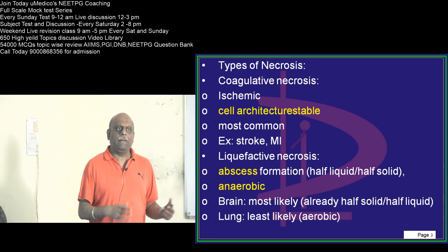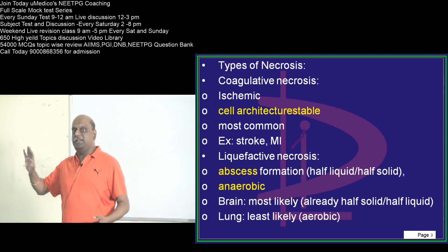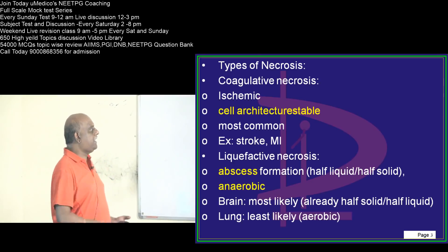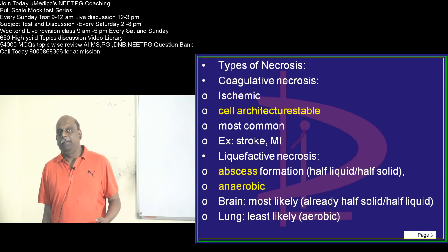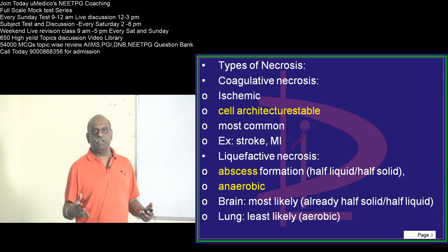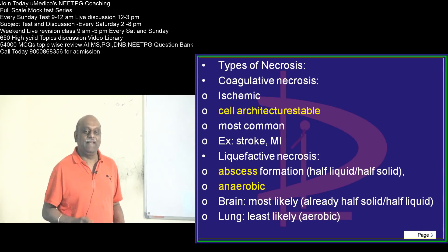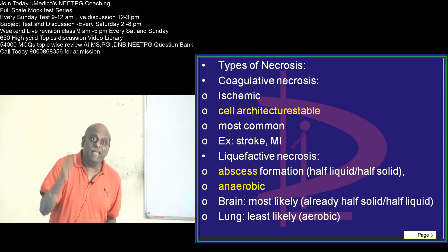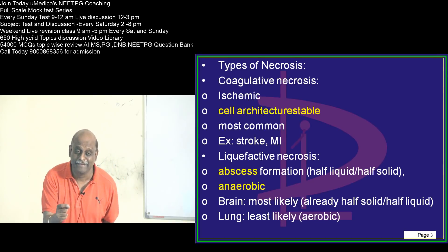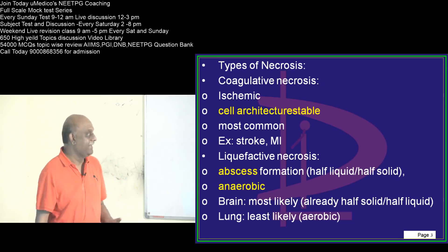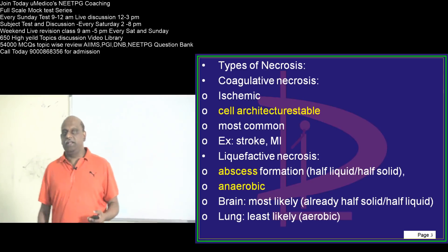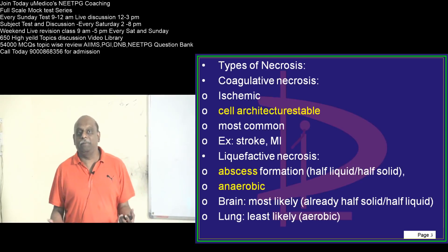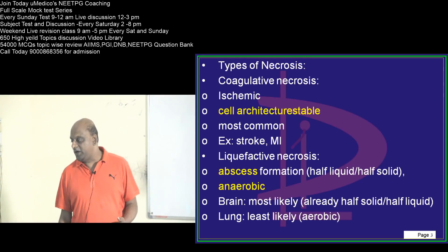Liquefactive necrosis is all about abscess formation, the formation of pus. Whenever there is any anaerobic necrosis, it is typically liquefactive. The brain is the most common location where you get liquefactive necrosis. But importantly for the NeatPG, the lung is the organ where you least often find liquefactive necrosis, because the lung has a lot of oxygen and is aerobic — liquefactive necrosis is essentially anaerobic.